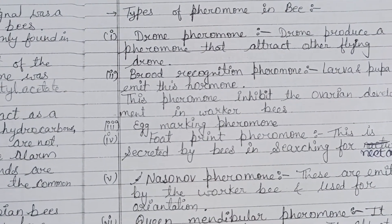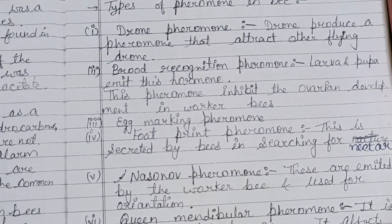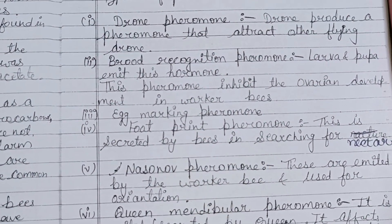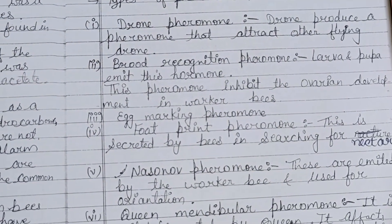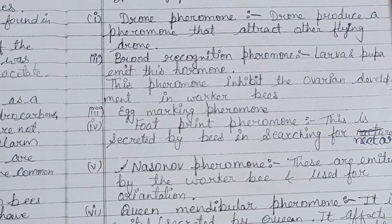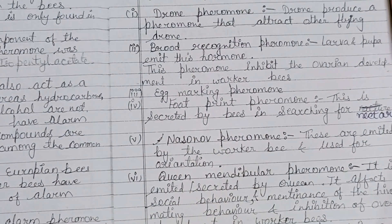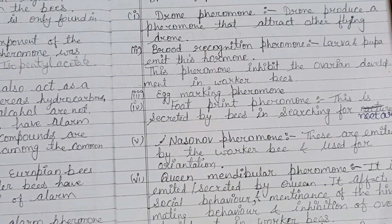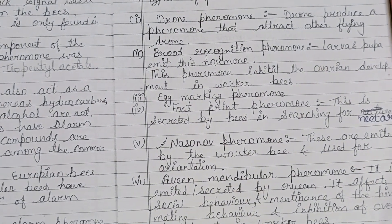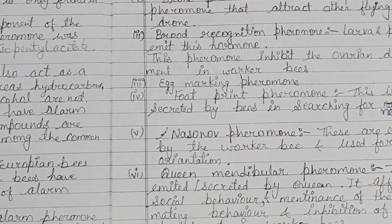The second is the brood recognition pheromone. Larvae and pupae — the early stages in the development of the honeybee — emit this pheromone. It inhibits ovarian development in worker bees and helps nurse bees distinguish worker larvae from drone larvae and pupae.